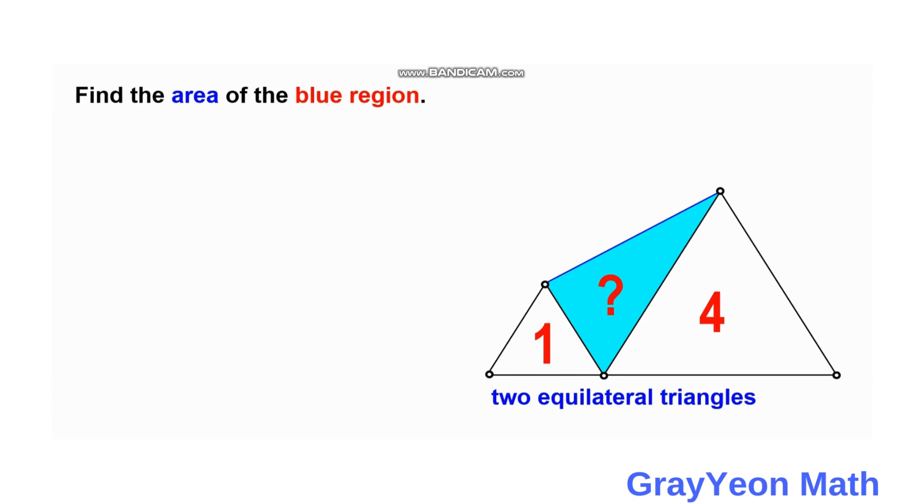First, we can draw a line from this side of this triangle, and this should be parallel with this segment, and another segment from that point to the apex of this smaller equilateral triangle. Notice that these two triangles are equilateral.